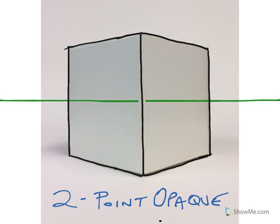If you take a look at the horizon line, if it is an opaque box, then that means we wouldn't see the horizon line through the front of the box. So we would need to erase this, and then what we would be left with is something that actually does look opaque.